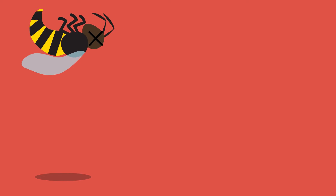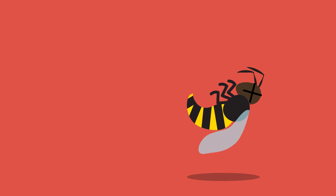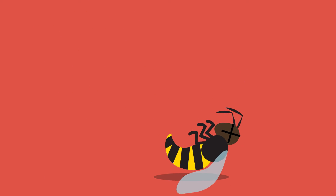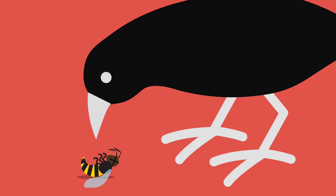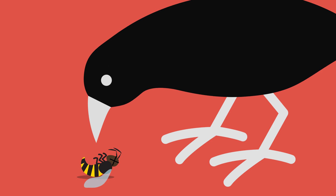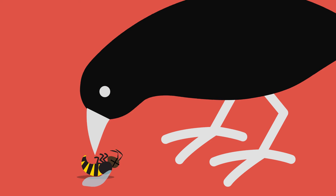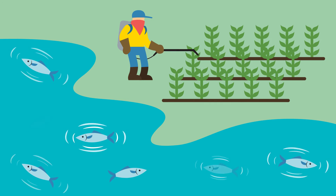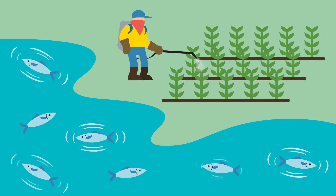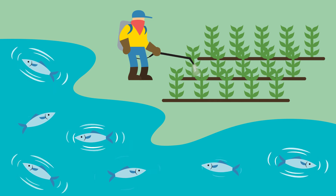Also, pesticides kill useful insects such as pollinators, and can harm other animals that eat the insects that have been poisoned. Spraying the pesticides also damages soil and water in the environment.